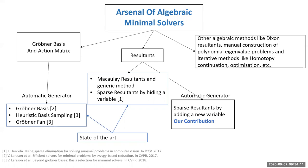Within the computer vision community, there has been renewed interest in resultant-based approaches as an alternative to Gröbner basis. Some work has been done in the community for solving such problems, but no automatic and generic method has been proposed for resultant-based solvers to date. The important point is that the only automatic generator available to the community today is the Gröbner basis-based approach — and by automatic generator I mean the offline/online stage framework for solving such problems.